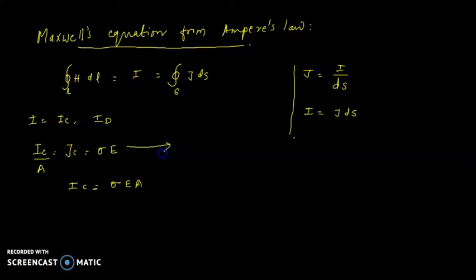Let us take this as situation number 1. And similarly, the displacement current density. The total current density is nothing but the current density due to the conduction current plus the current density due to the displacement term. So this is J, the total current density.